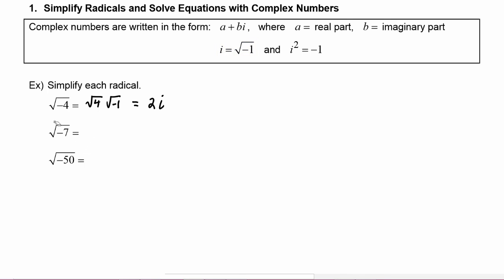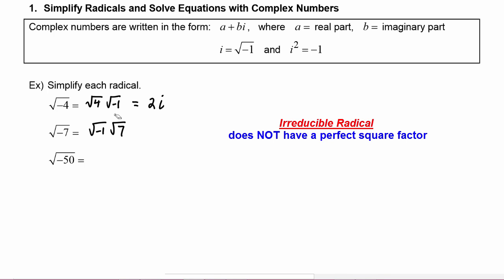Next we have the square root of negative seven, so we have radical negative one times radical seven. The reason I put radical seven last is because it is irreducible — meaning there are no perfect squares that are factors of seven — so this becomes i radical seven.